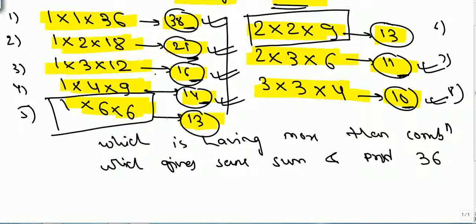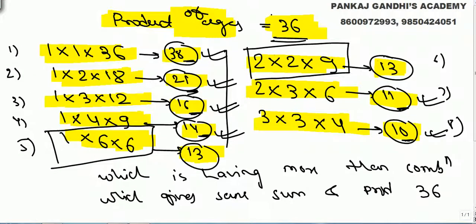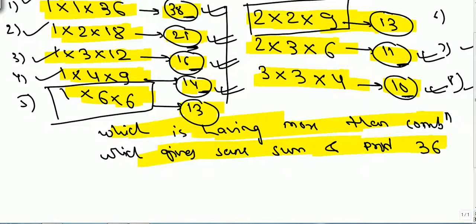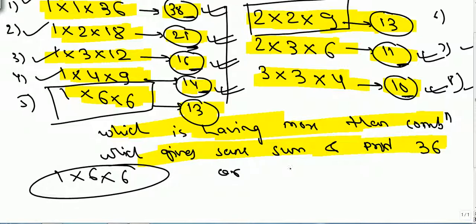Only if we see door number 13 will he be confused, because the answer could be either 1,6,6 or 2,2,9 — both give summation 13. The product is 36 and he knows any one of the eight cases are possible. When we tell him to check the door number, if the summation leads to a unique case — cases 1, 2, 3, 4, 7, 8 — he will get the answer. But door number 13 gives two possible combinations, so he cannot determine the answer. The door number is 13, giving either 1,6,6 or 2,2,9.